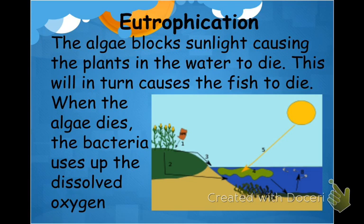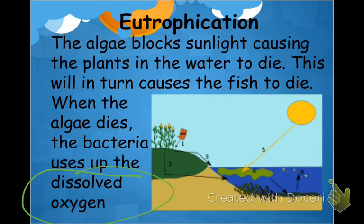As algae grows in a body of water, it forms a thick layer that blocks sunlight. Plants at the bottom of the pond can no longer get the sunlight they need for photosynthesis, so they die. When plants die, fish that ate those plants can no longer eat them and they die too. If the blocked sunlight doesn't collapse the ecosystem on its own, when the algae bloom dies it uses up all the dissolved oxygen in the water, causing fish to suffocate and die.